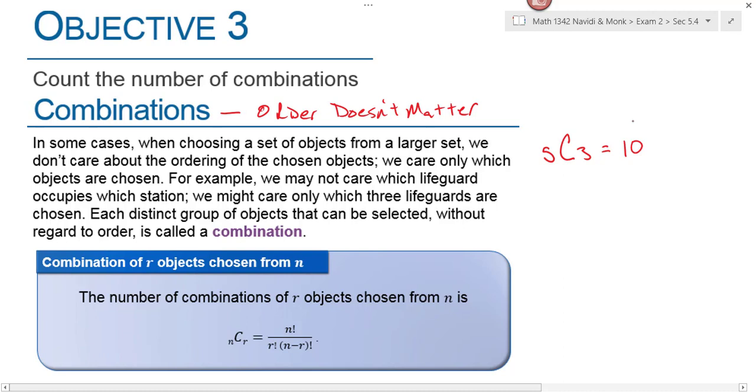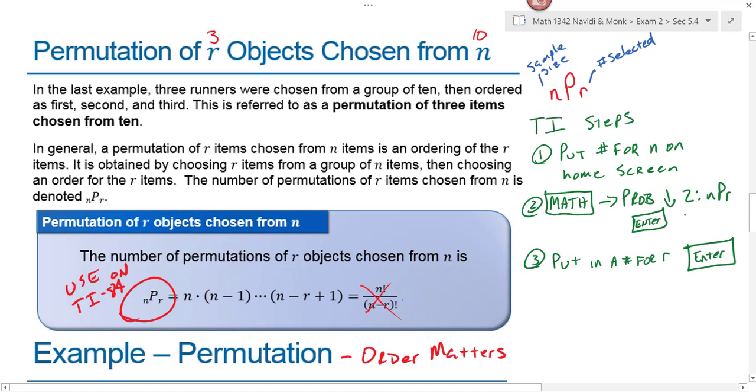The number of combinations can be found using this formula, or it can be found using the TI calculator, and it's all underneath the math probability. You just go down to three instead of two. So I'm not writing these steps down. If you want to go back and modify your notes here, number three would be combinations. I would just go back and make that change to your notes for the steps for the TI calculator. Math, probability, go down then to combinations instead of permutations. The steps to get there are exactly the same.